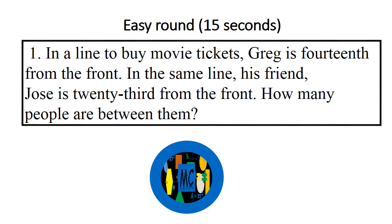Question 1: In a line to buy movie tickets, Greg is 14th from the front. In the same line, his friend Jose is 23rd from the front. How many people are between them? Go!